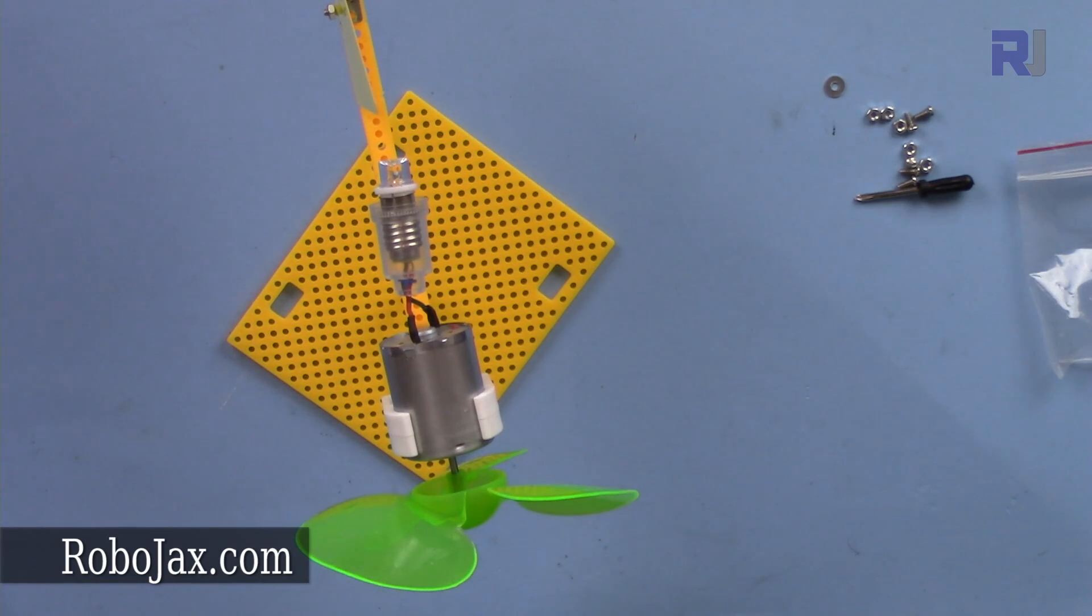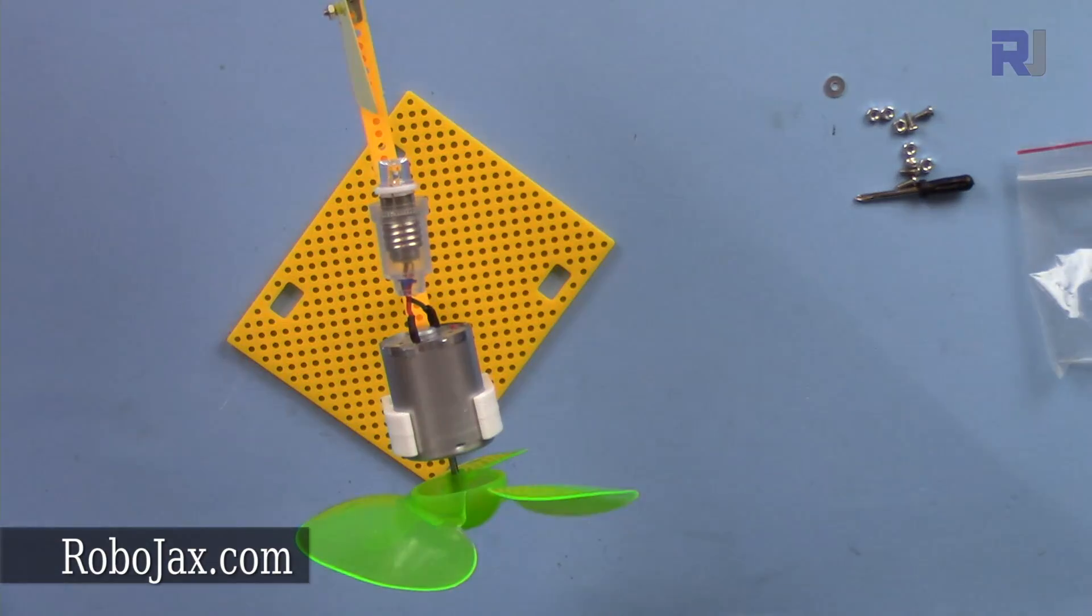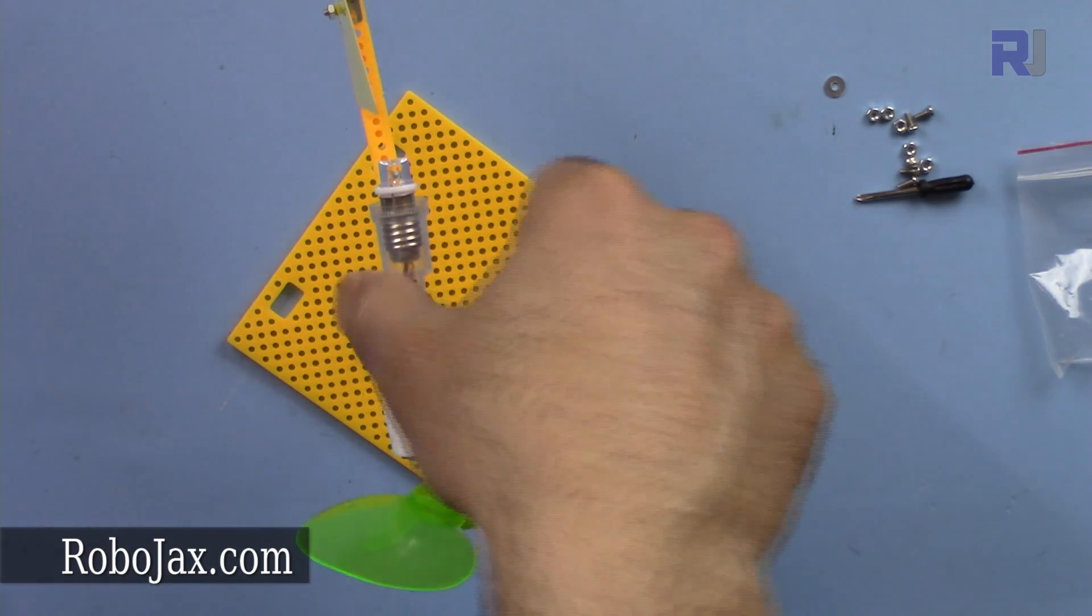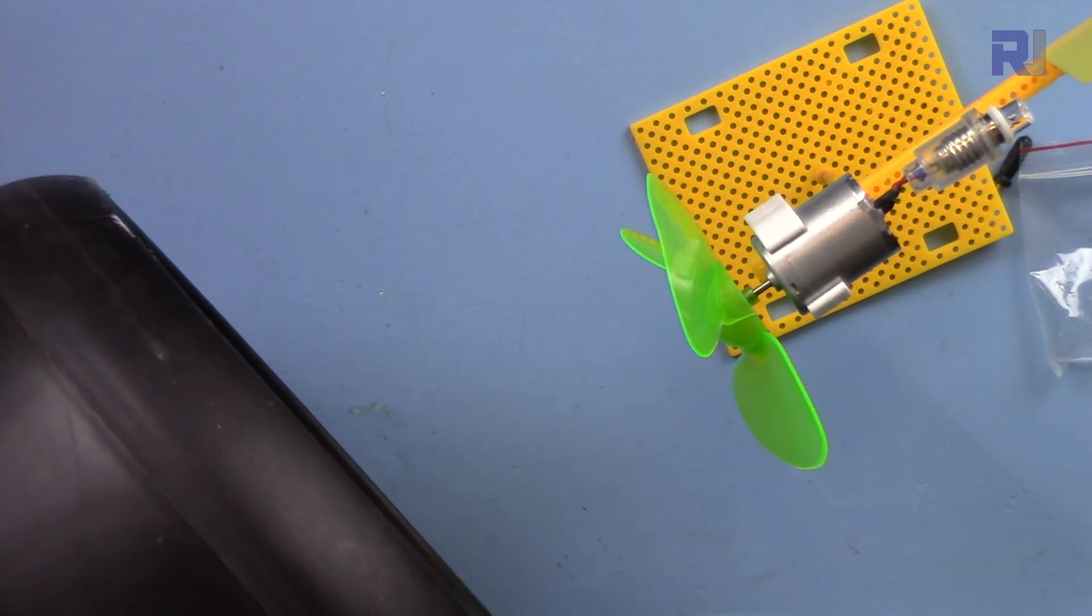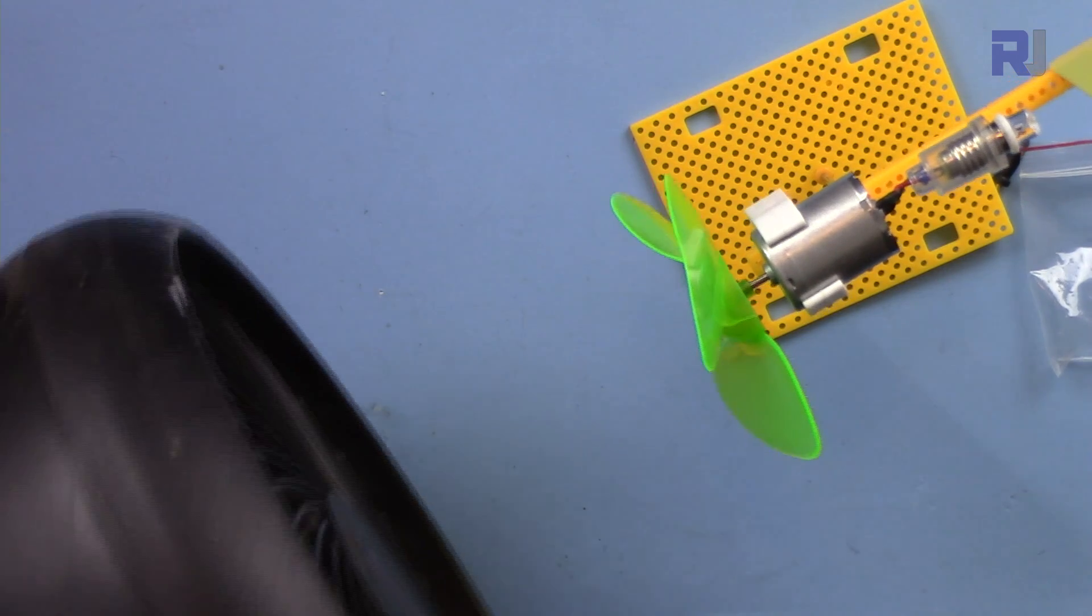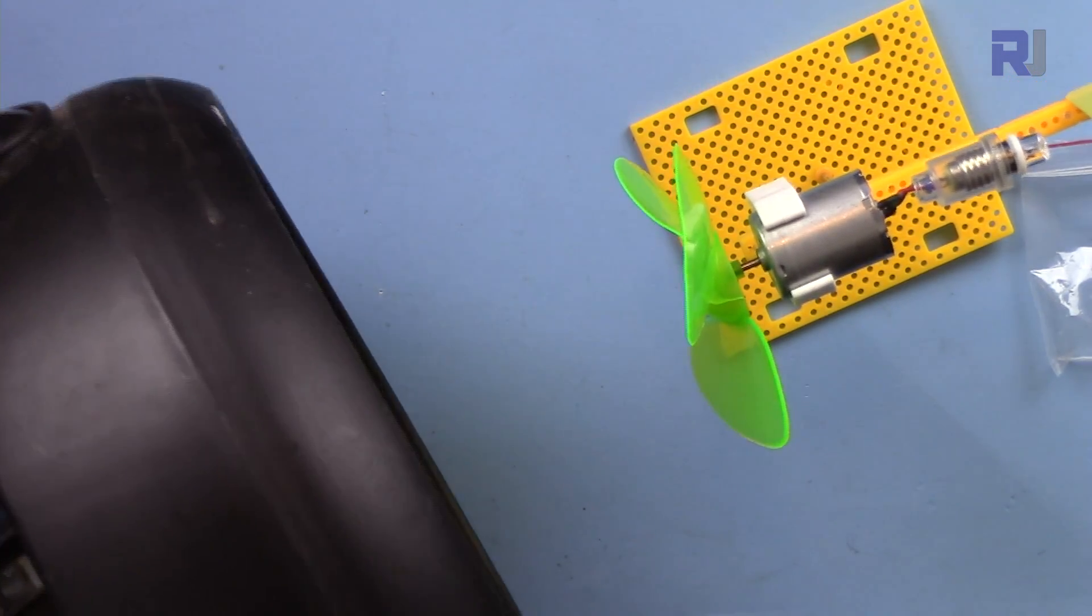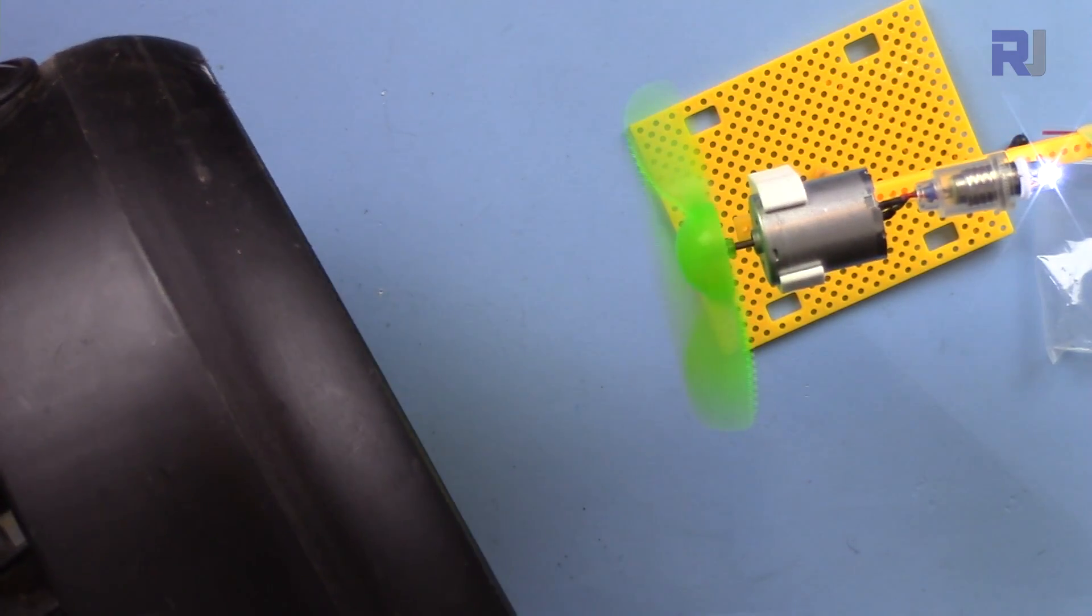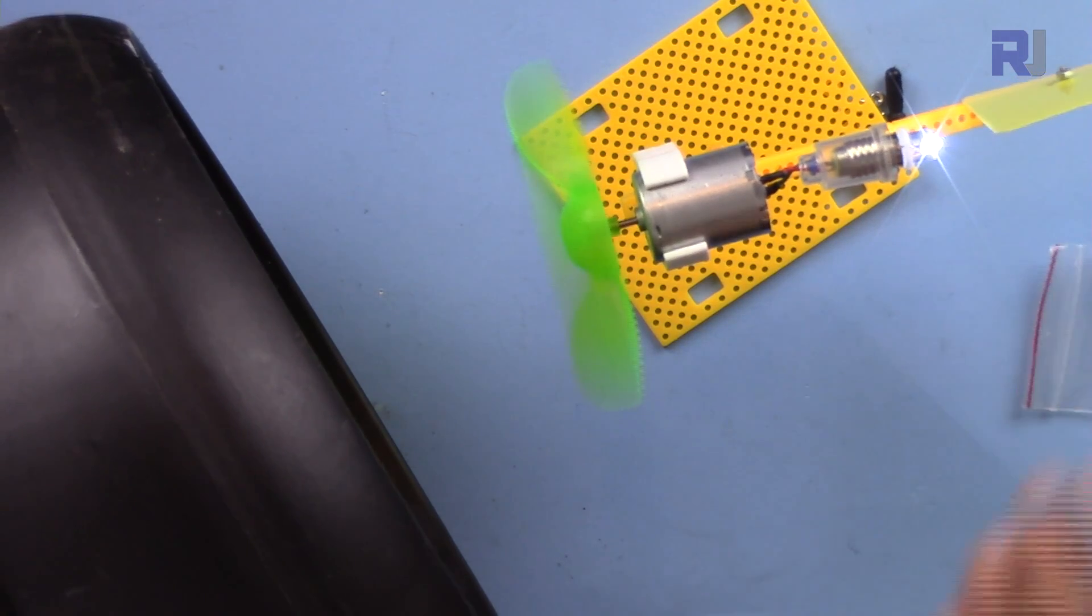Okay, now I have a fan here that is blowing wind. So this is the fan, I'm turning it on. Let me see if I can include both in the same screen. So you can see that's the light.